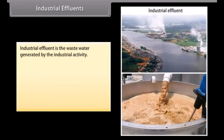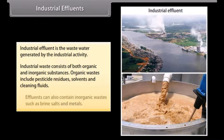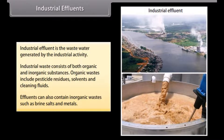Industrial effluent is the waste water generated by industrial activity. Industrial waste consists of both organic and inorganic substances. Organic wastes include pesticide residues, solvents and cleaning fluids. Effluents can also contain inorganic wastes such as brine salts and metals.